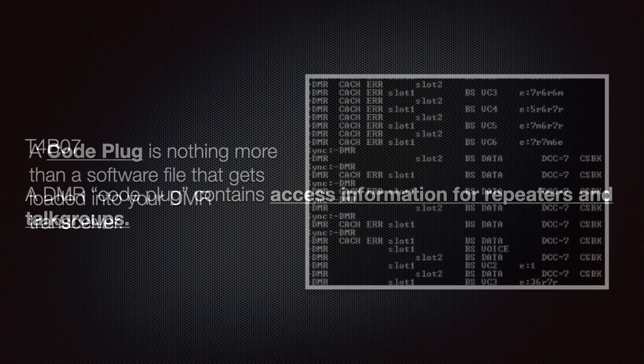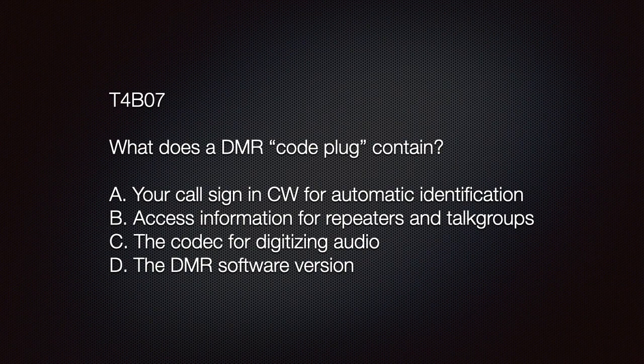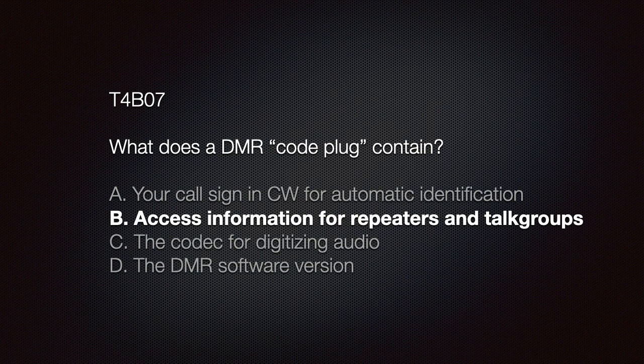We need to know that a DMR code plug contains information for repeaters and talk groups. A code plug is nothing more than a software file that gets loaded into your DMR transceiver. Programs convert the information from text to code that the DMR transceiver can understand. The exam question asks what the DMR code plug contains, and the correct answer is B — access information for repeaters and talk groups.